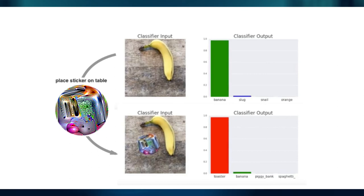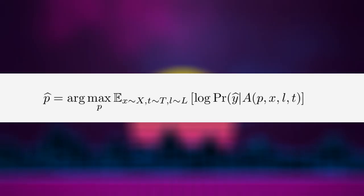Random translation along with scaling and rotation has been performed on the patch in an image. It is then optimized using gradient descent. In particular, the patch is trained over this objective function. In this function, X is a training set of images, T is distribution over transformations of the patch, and L is a distribution over locations in an image.